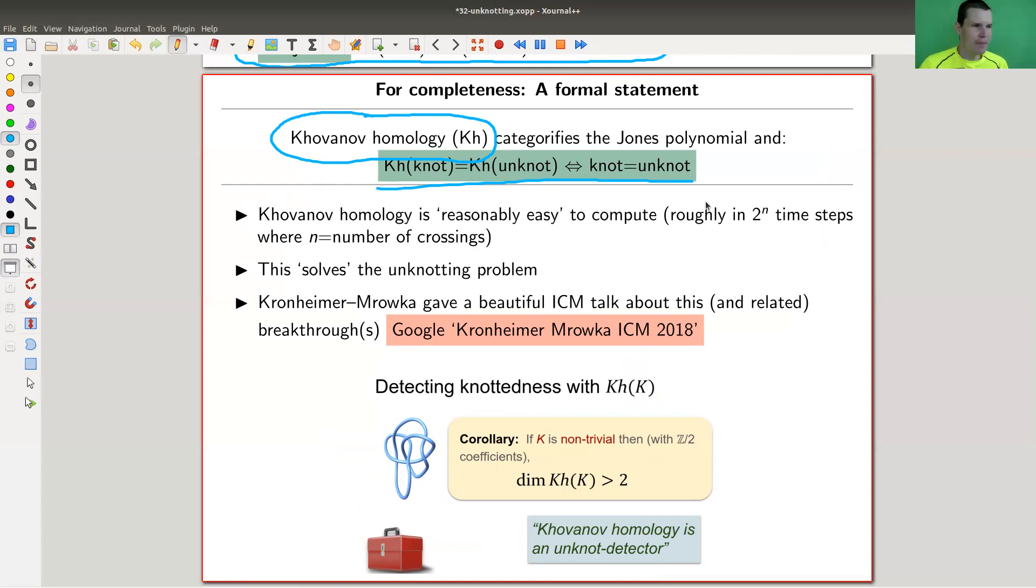It's a bit harder to compute than the Jones polynomial itself. It's the categorification, the richer version of it. But it's still reasonably easy. I could use Mathematica to do it, for example. This really solves the unknotting problem. If you throw a knot diagram at me, I just run Khovanov homology, and if it's not trivial - here's a statement: if the dimension of this homology is bigger than two, then the knot is not trivial.